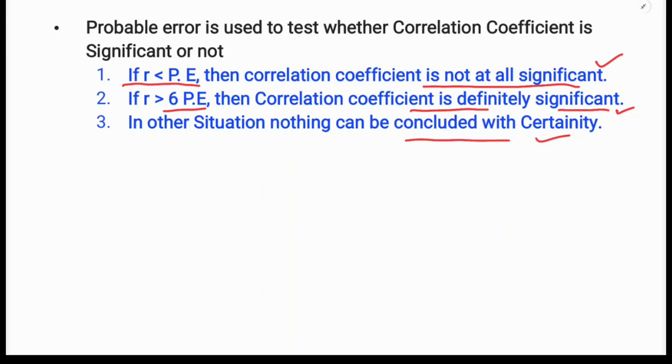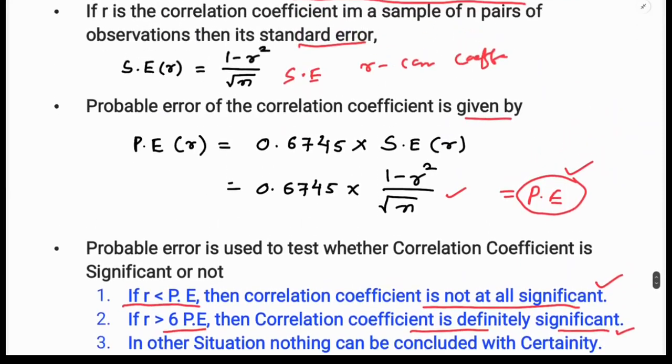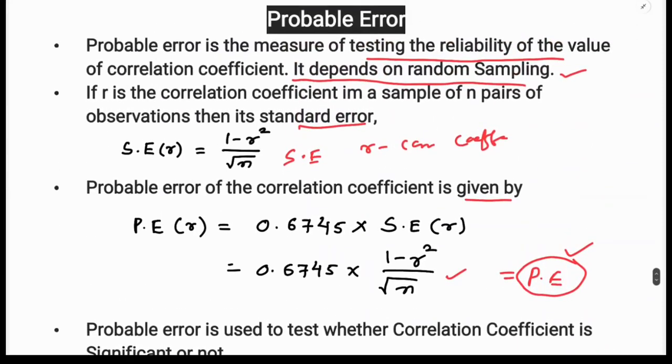So this is about probable error. The probable error is used to test whether the correlation coefficient is significant or not.